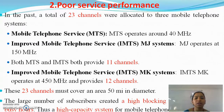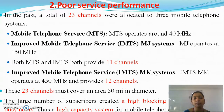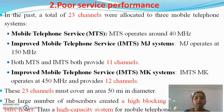So totally we have 23 channels, and they must cover an area around 50 miles in diameter. This large coverage area is a major limitation for poor service and limited service capability. The large number of subscribers created a high blocking probability during busy hours — even when the system cannot provide more channels, there is high demand. Thus, a high capacity system for mobile telephony is always needed.